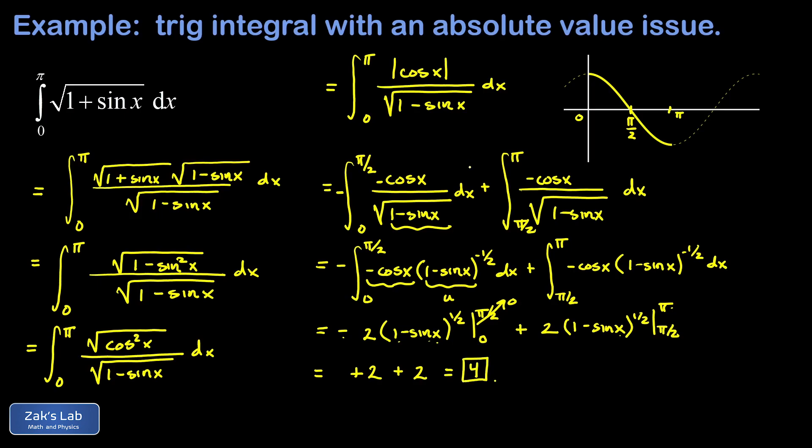There's one other point I want to mention for the particularly rigorous among you. If I go back to this step where I've split the integral into two pieces I notice that subbing in pi over 2 for x creates a 0 denominator.